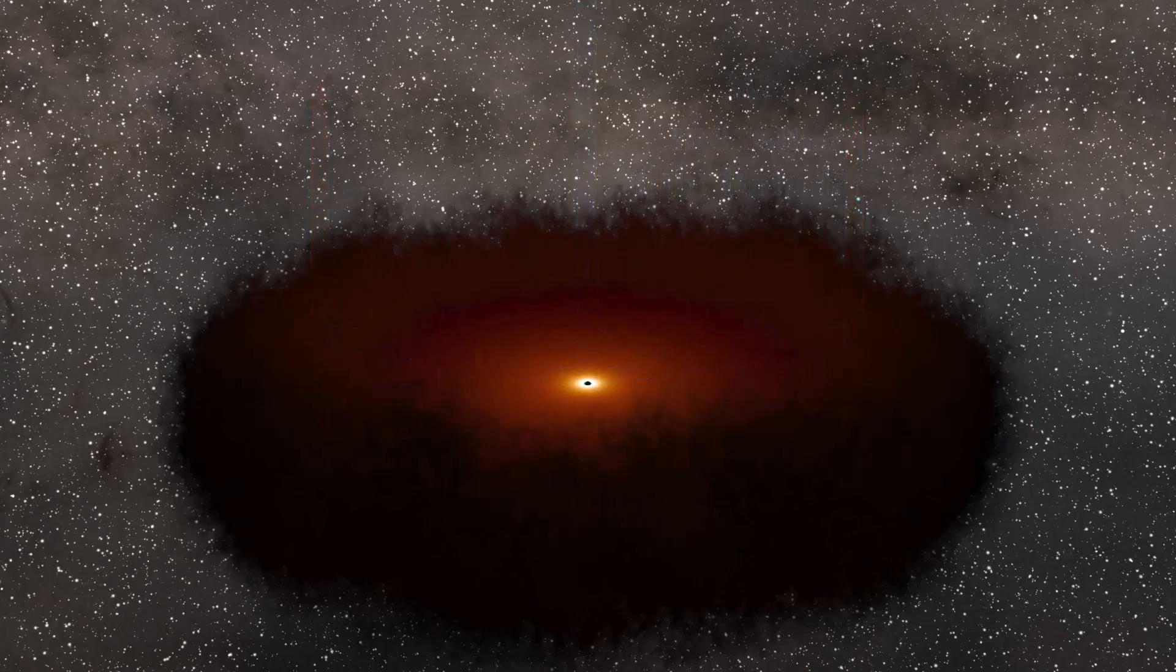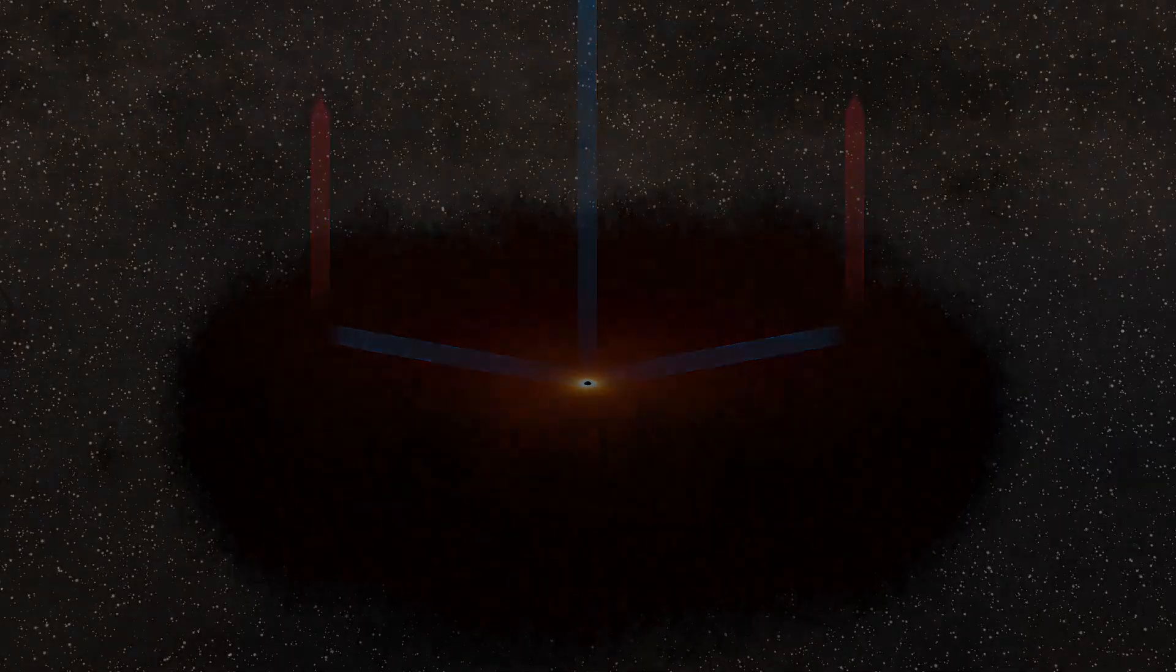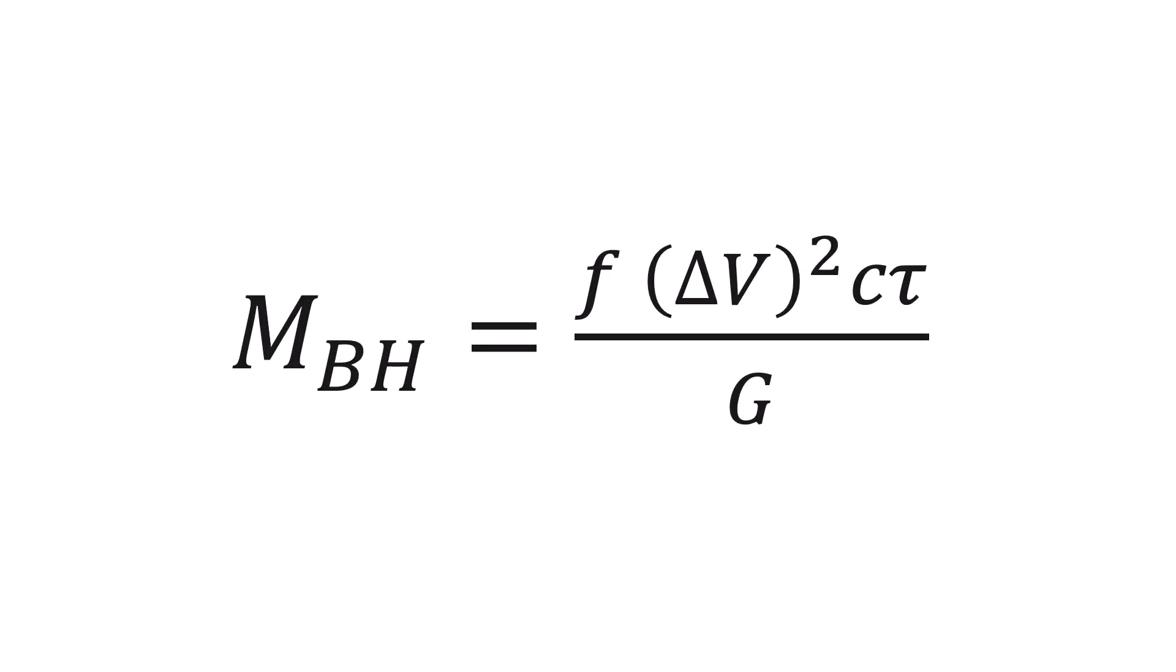So we measure this using our telescopes. It can take between weeks and years. Once we have a good measurement for the time delay and equivalently the size of the broad line region, we can apply some theory about how structures form under gravity in order to estimate the mass of the black hole at the centre of the galaxy. This is reverberation mapping.